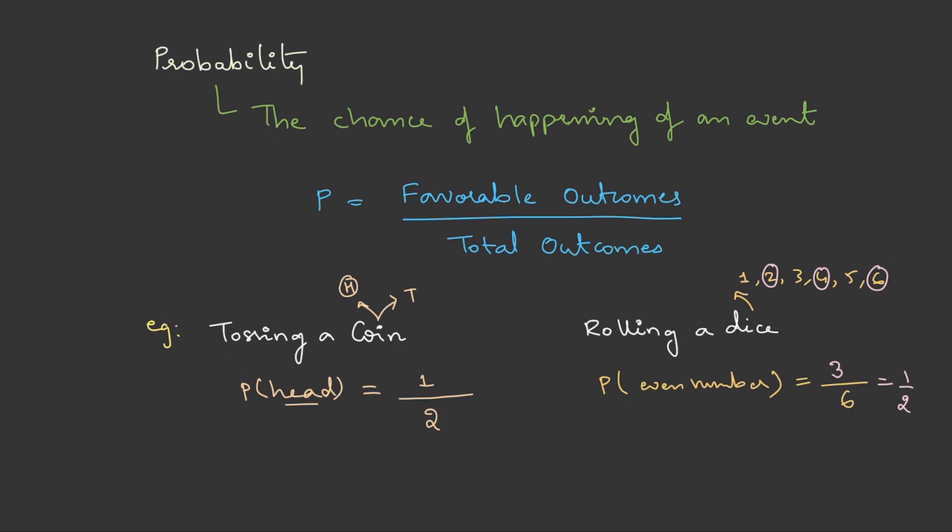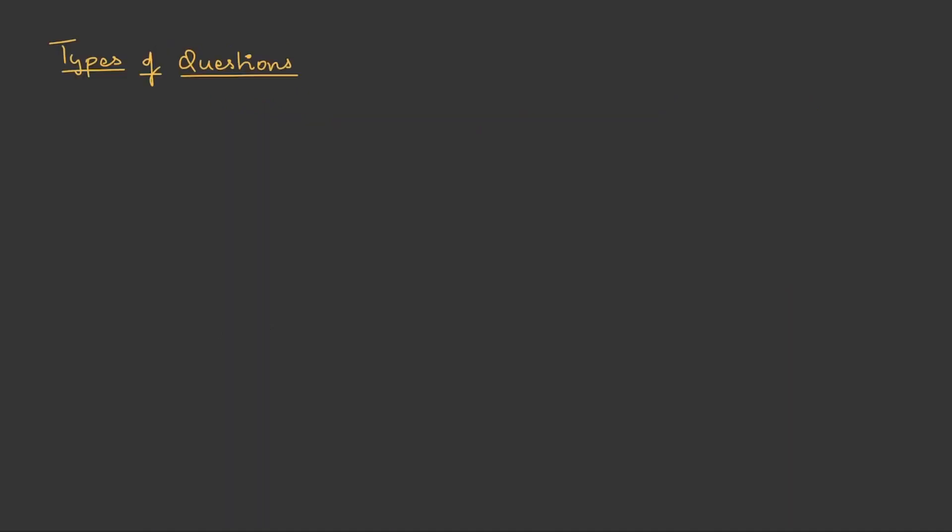So this is a very basic outline of what probability is and how do we calculate it. Now let's look into what are the different types of questions which come in the exams. The first type is problems on balls or marbles. Generally, they will give you a bag with different kind of balls. We pick few balls and they will ask you what is the probability of getting a specific color or a specific number of balls.